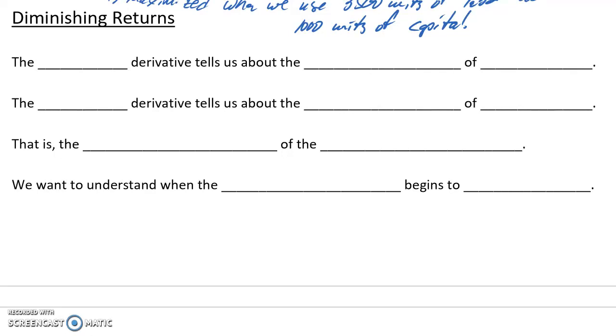We've talked about optimization, both with single and multivariable functions. The process is very similar for both, although with the multivariable problems, we did introduce this idea of having constraints applied to our function. But now we want to shift gears into a related topic, but a little bit different in terms of application, and that's the idea of diminishing returns.